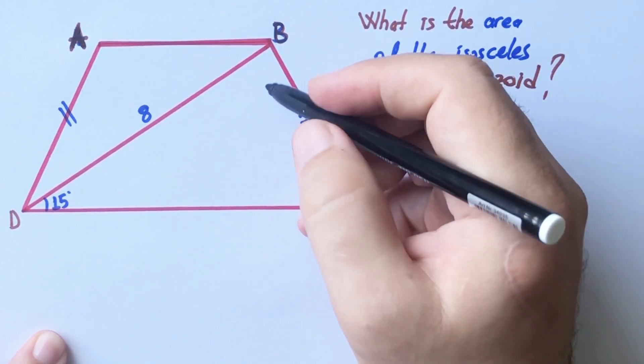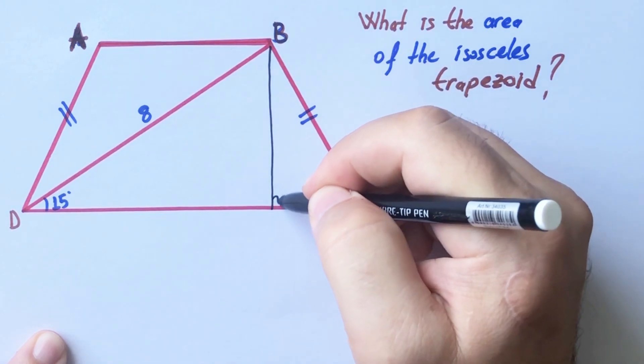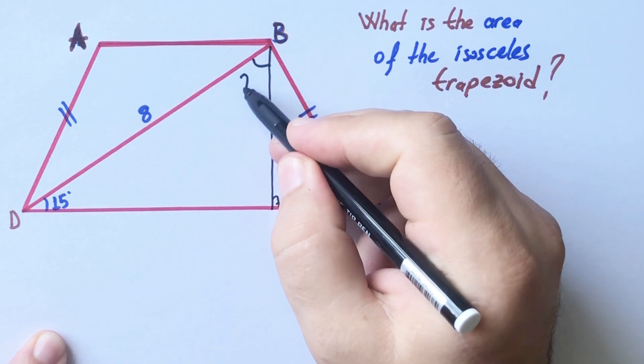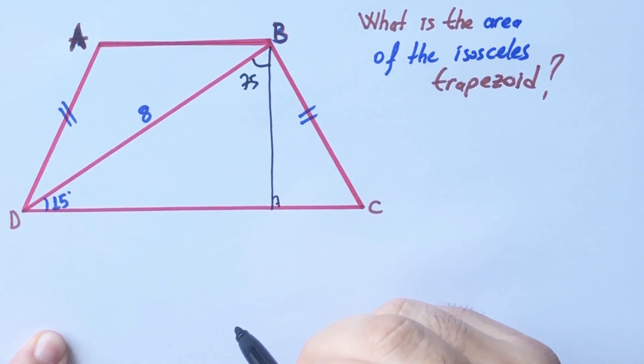First step, if we draw a perpendicular line opposite of the 15 degrees, here must be 75 degrees, right?